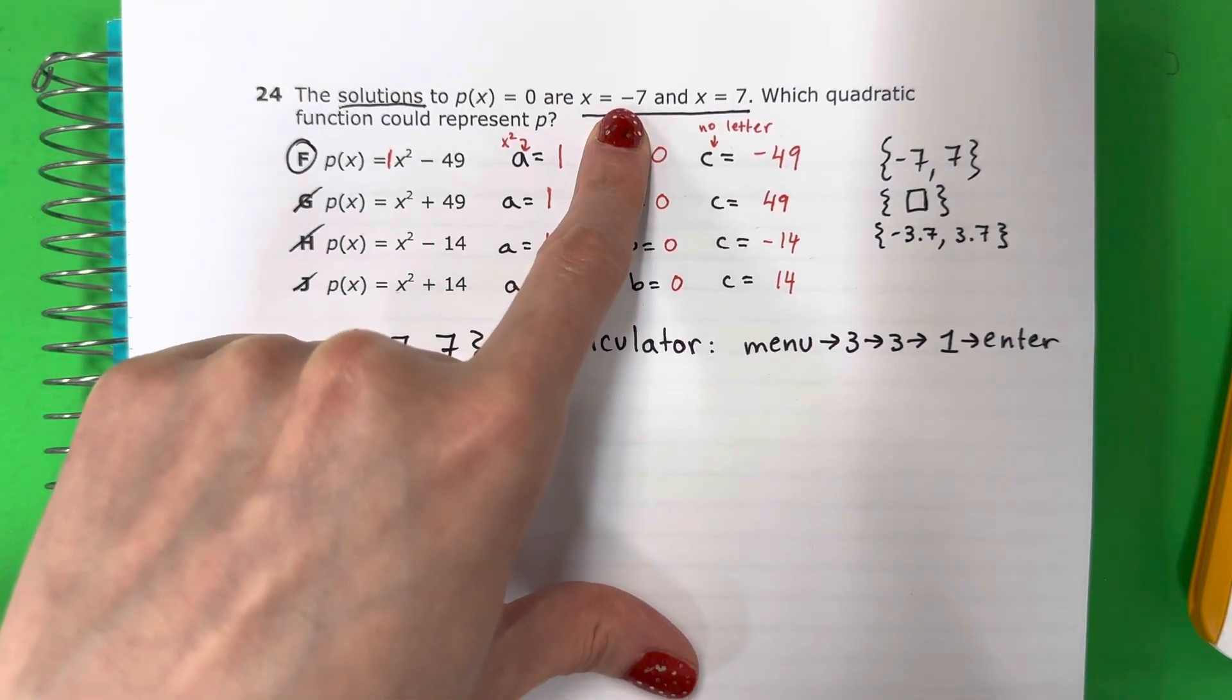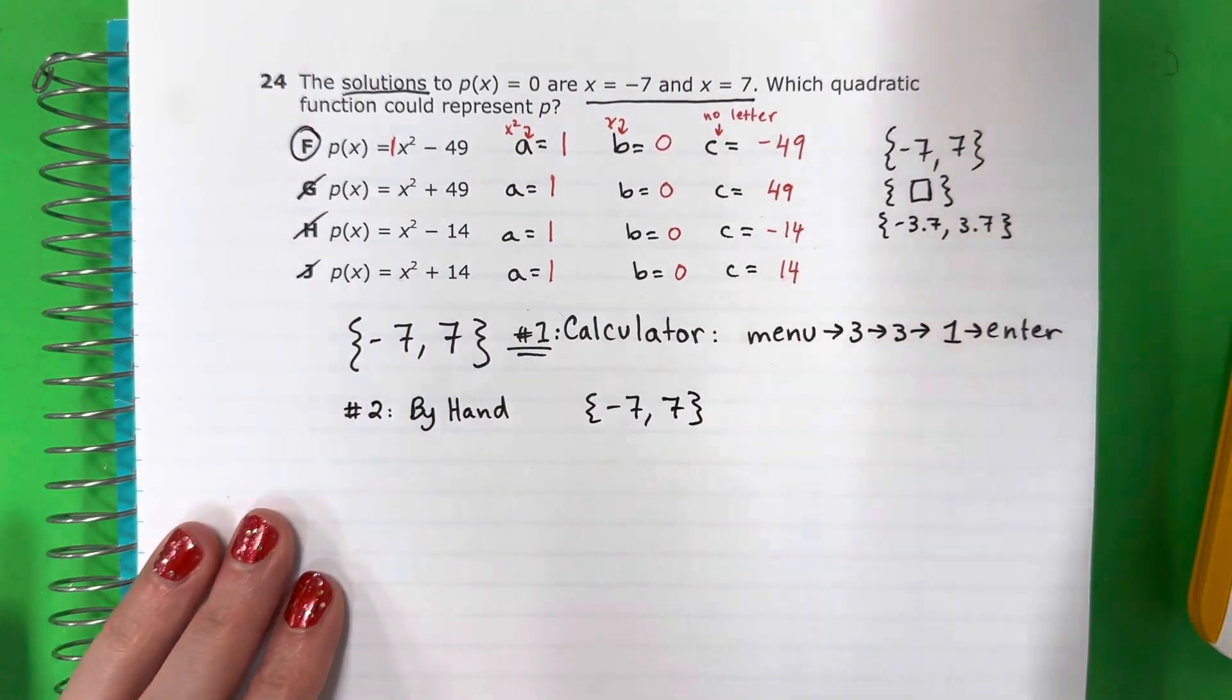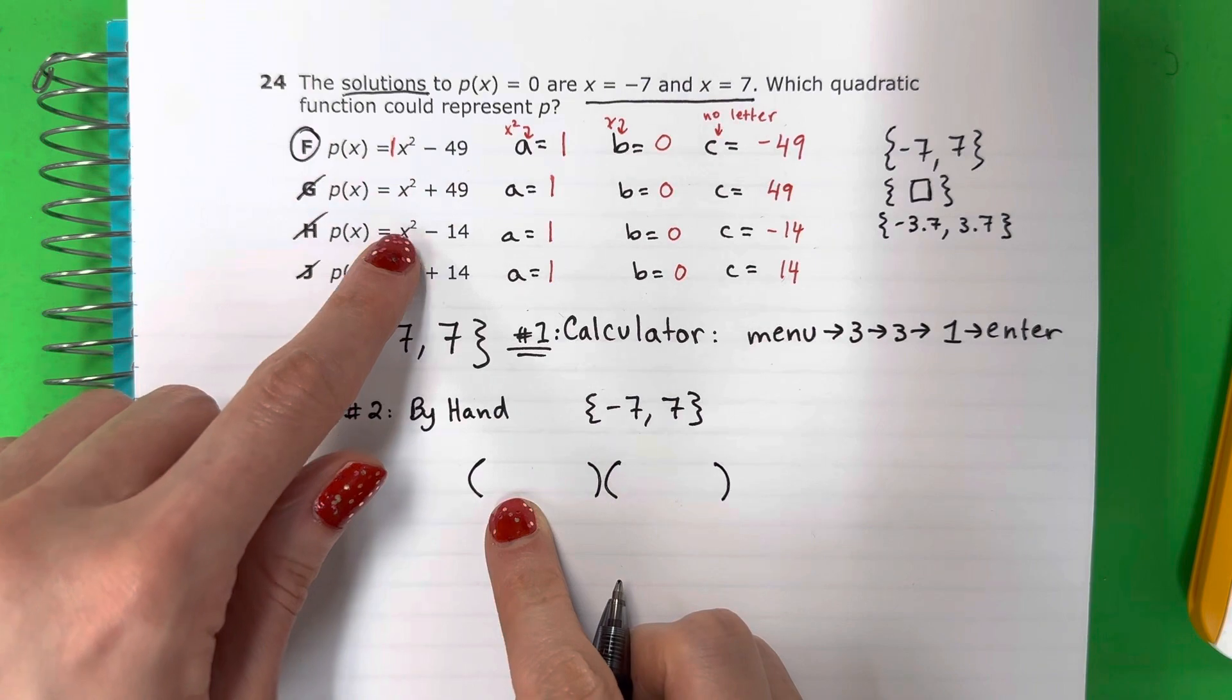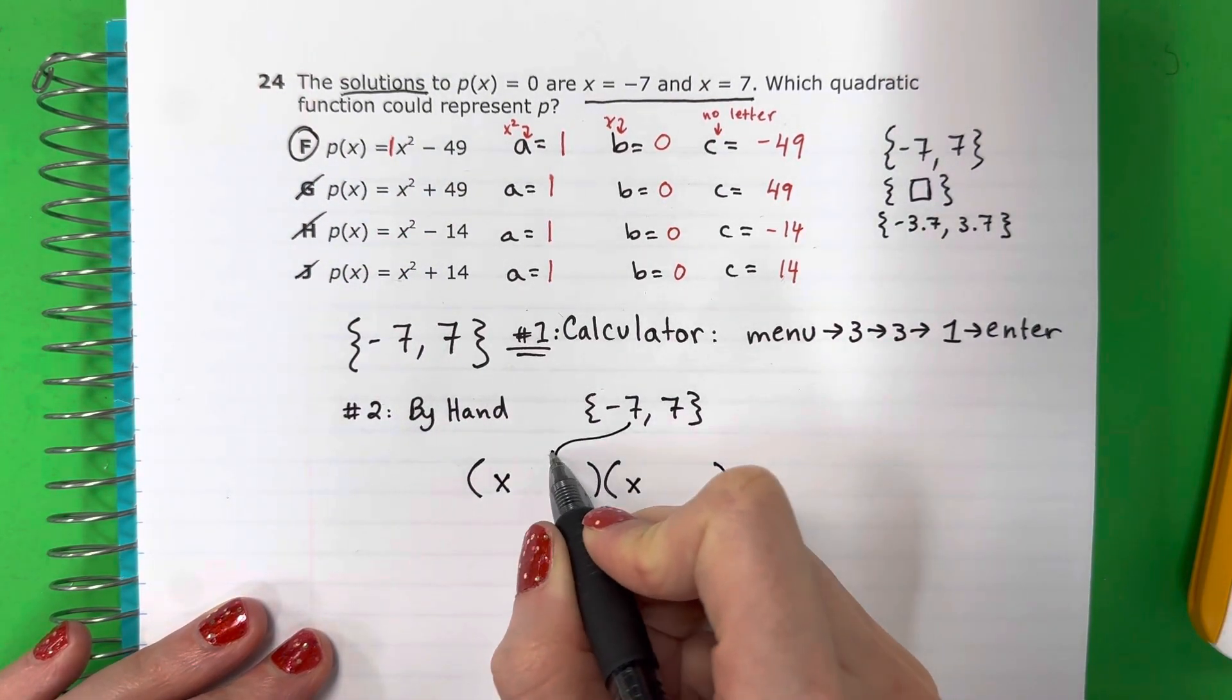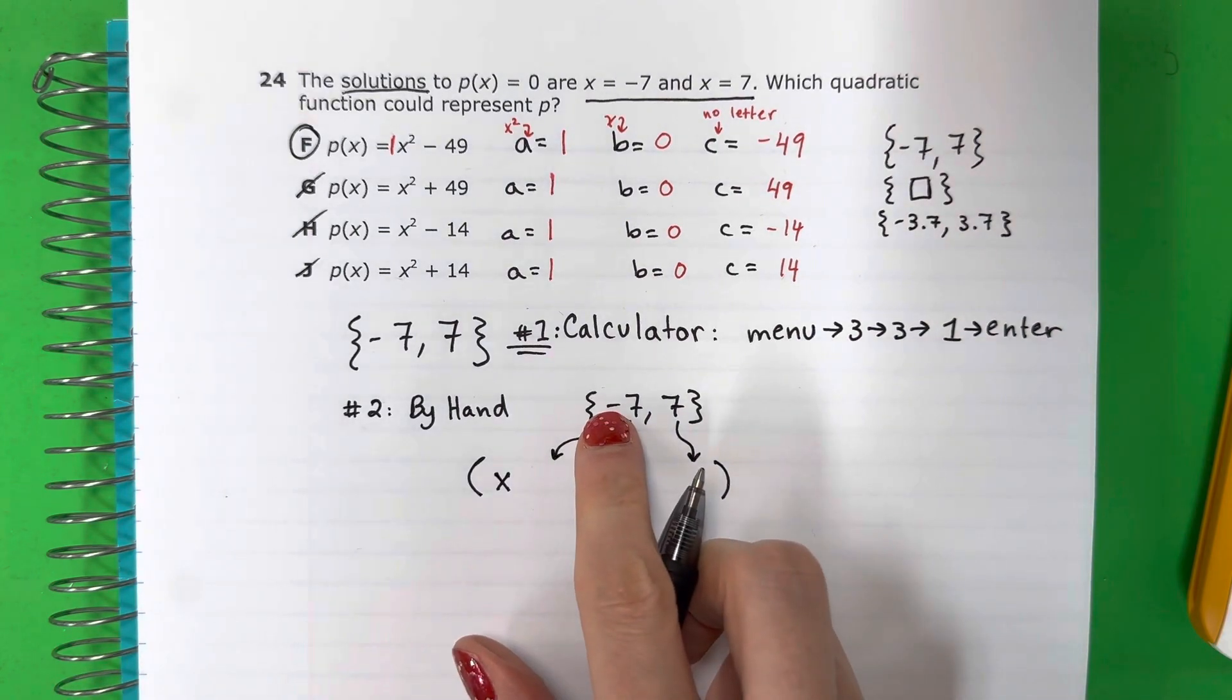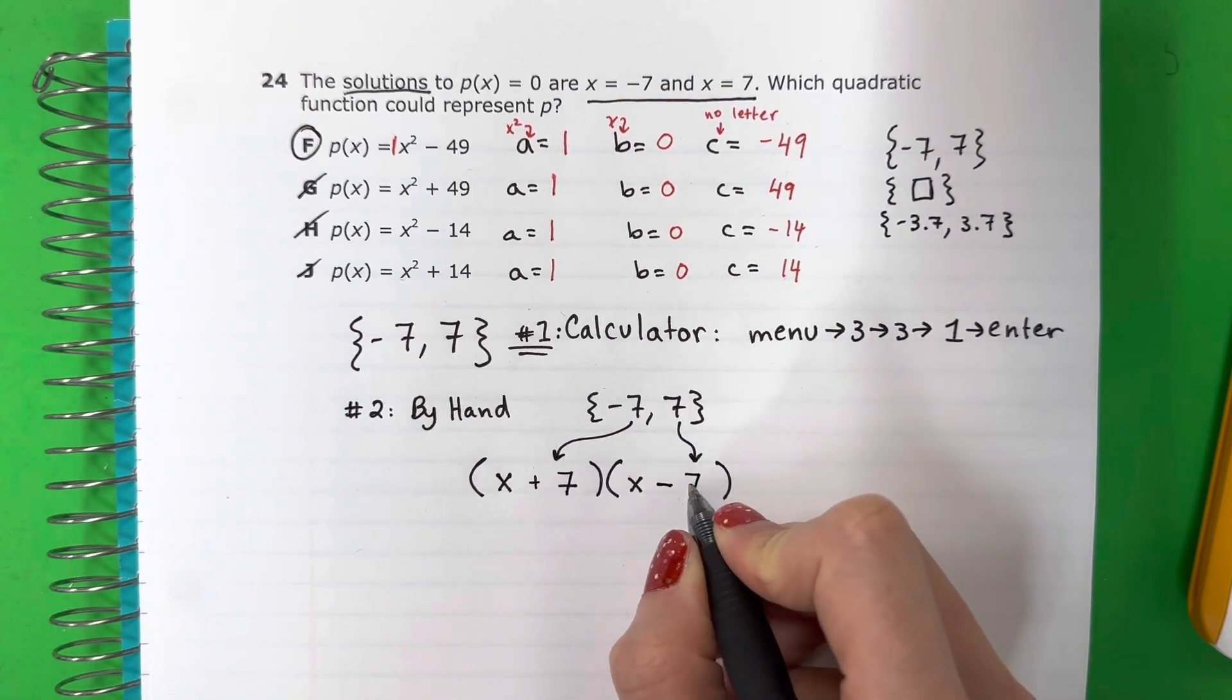So this is what I want: -7 and 7. What you're going to do is first make parentheses, un par. Put the letter X in each. Then put these numbers here, but opposite sign. Pero señal opuesto. This is negative, so I will put positive 7. This is positive, so I will put negative 7.